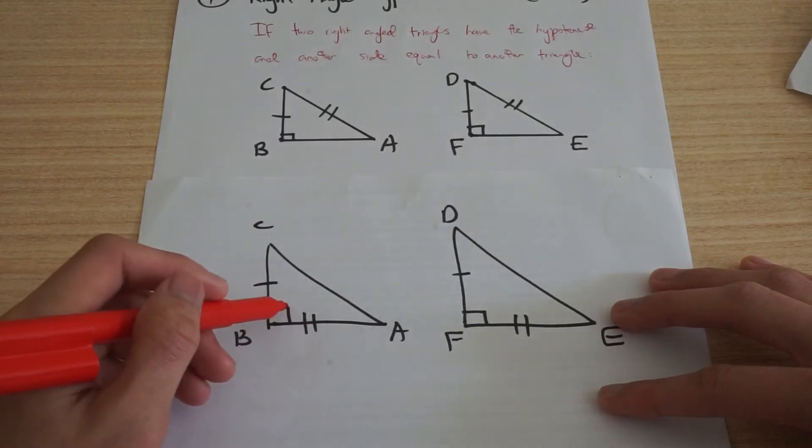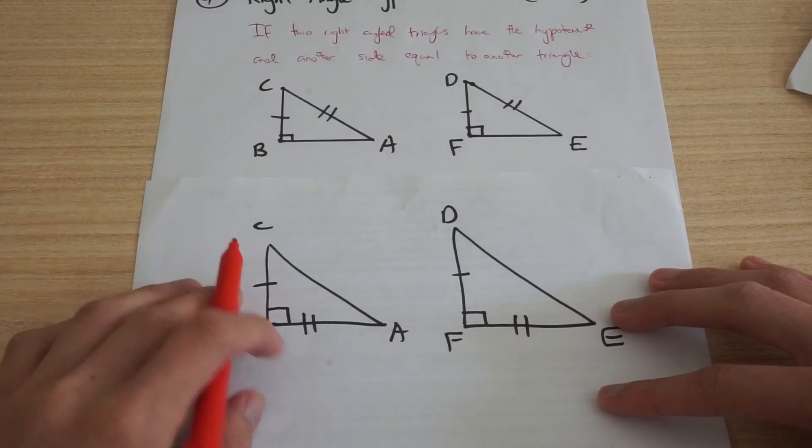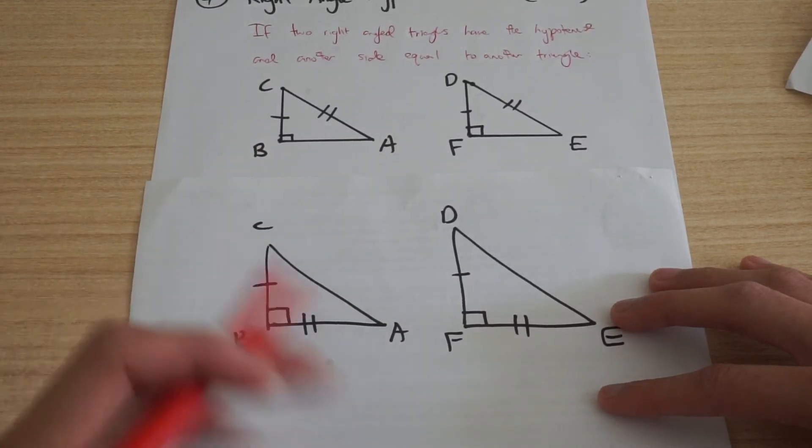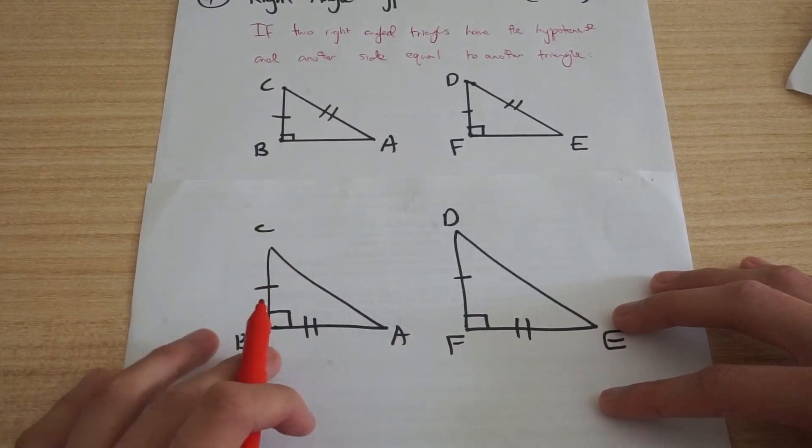Well, this angle is actually in between the two sides so I could use my SAS proof for that one. You just want to be careful when you jump into a question, just actually look at what they've given you and see what information you have that you can use.